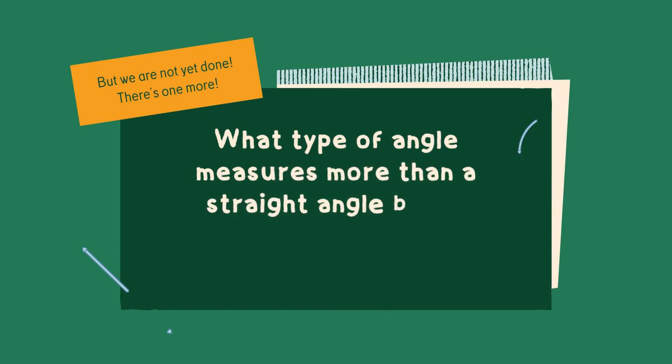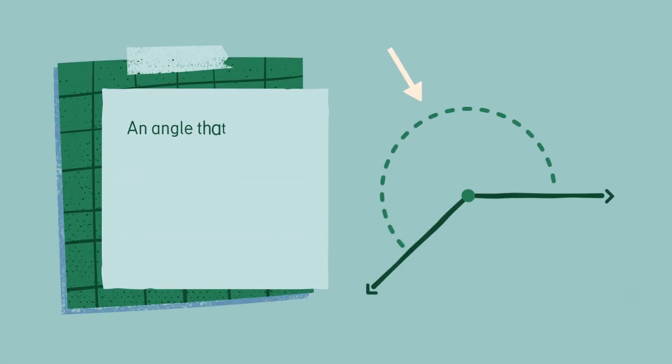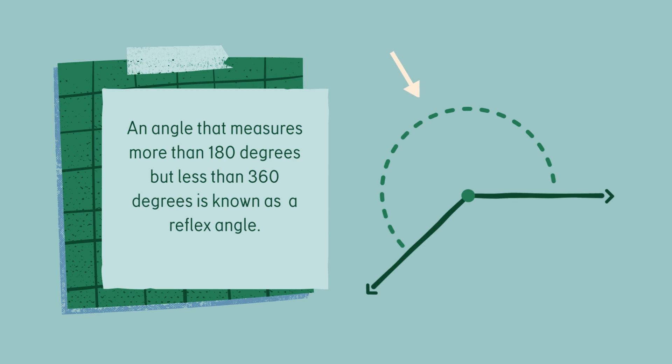So what type of an angle measures more than a straight line but is less than a full revolution? An angle that measures more than 180 degrees but less than 360 degrees is known as a reflex angle.